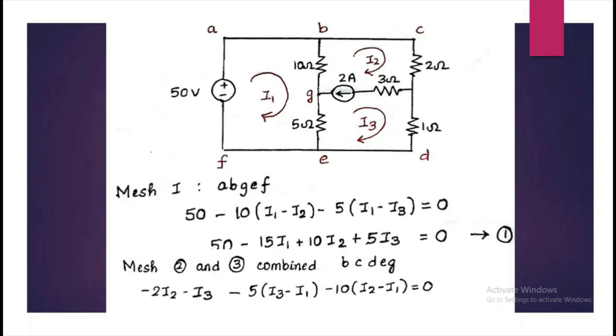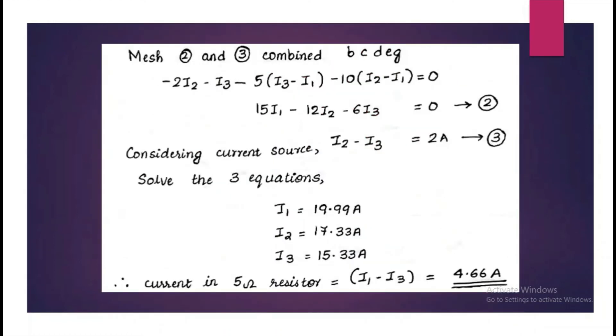2 ampere and i2 are in the same direction, so that is why we are writing the equation as i2 minus i3. This is equation 2 and this is equation 3.